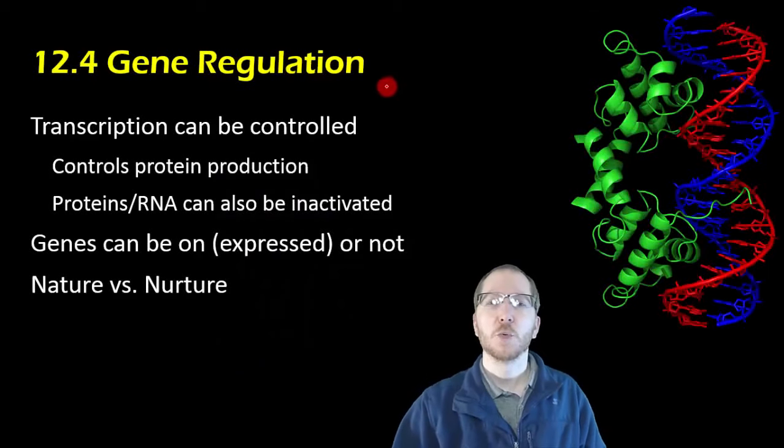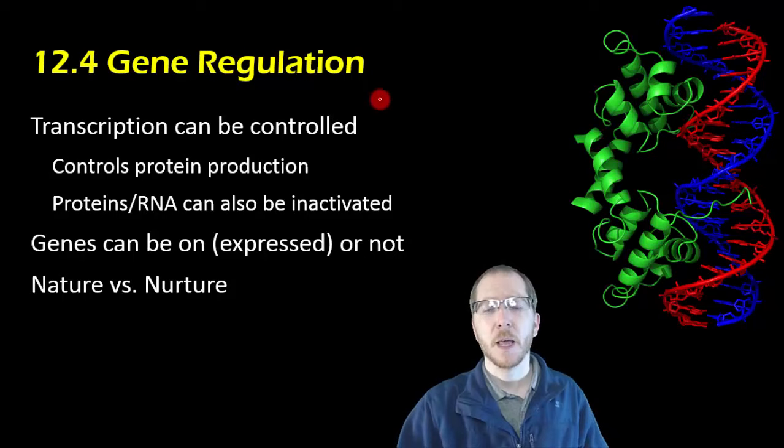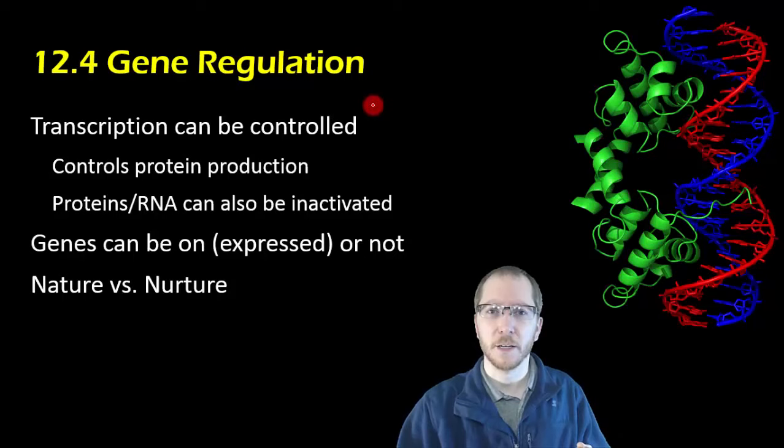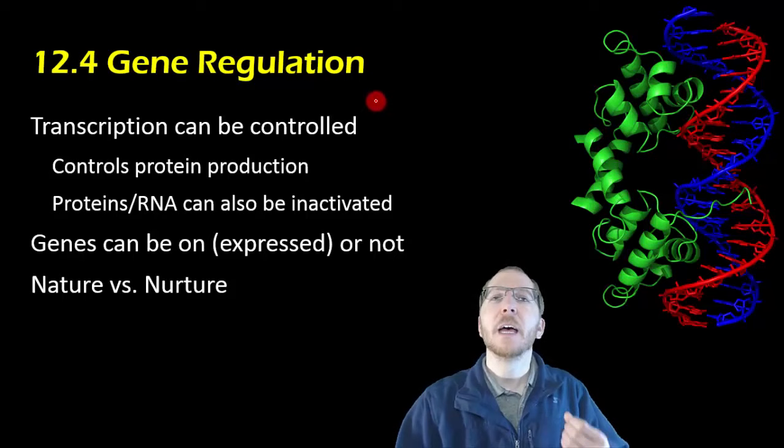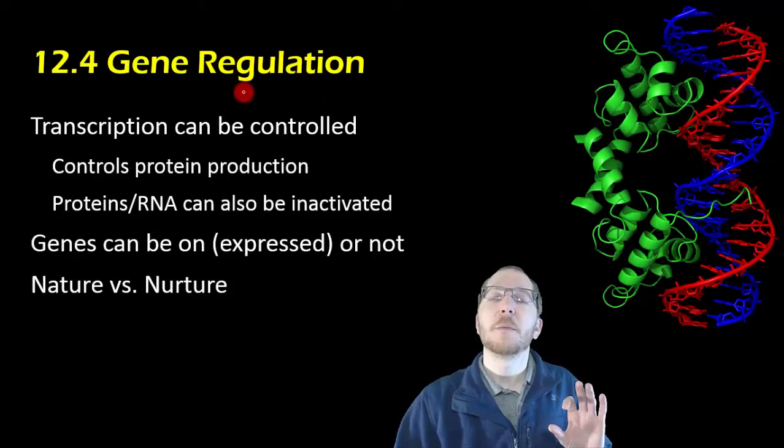Welcome to section 12.4, where we're going to wrap up molecular genetics. We want to understand that we do transcription and translation for a reason. This idea of the central dogma, where DNA can go through transcription and become RNA, can go through translation and become a protein, giving you some phenotype, is important because it's something that can be controlled. We're going to call this control gene regulation.